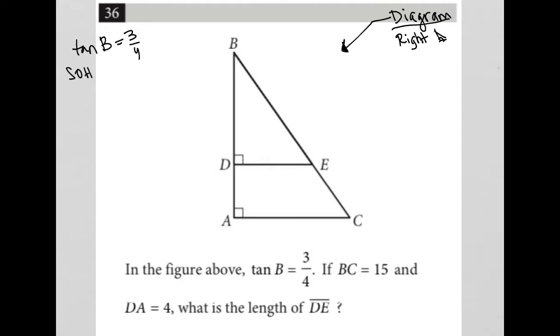Well, we know from SOHCAHTOA that the tangent of an angle, tan x, is equal to the opposite side over the adjacent side. So, this three over four has to relate to the opposite of that angle B to the adjacent.